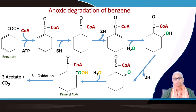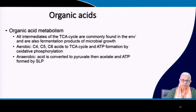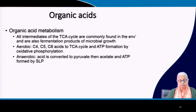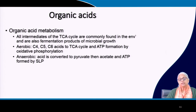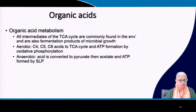Regarding organic acid metabolism: all intermediates of the tricarboxylic acid cycle are found in the environment and are also fermentation products of microbial growth. Under aerobic conditions, C4, C5, and C6 acids can be brought into the TCA cycle, and ATP can be formed by oxidative phosphorylation. Under anaerobic conditions, these C4, C5, and C6 acids can be converted to pyruvate and then to acetate, with ATP formed by substrate level phosphorylation (SLP).